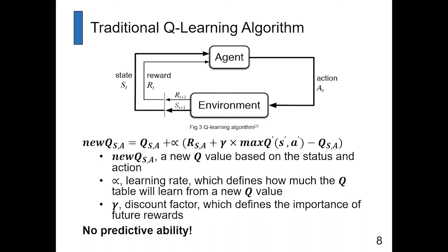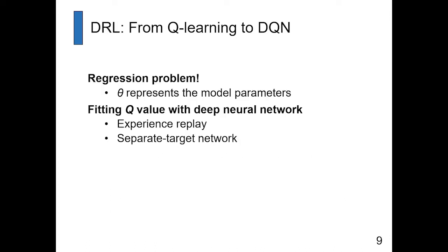To solve this, we can use deep learning to evaluate more states and get more generalized action functions. By fusing deep learning and Q-learning, we get DQL — Deep Q-Learning. The DQL network uses experience replay and a separate target network, which solves the traditional Q-learning network's scalability problem.